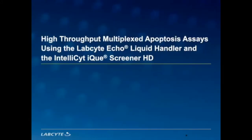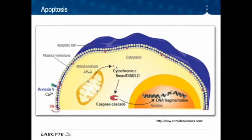As an example, I wanted to share some work using the LabSite Echo liquid handler and the IntelliSite IQ HD to run high-throughput, multiplexed apoptosis assays. Apoptosis is the best characterized type of programmed cell death. Because of its importance in development, homeostasis, and the pathogenesis of different diseases such as cancer, apoptosis has undergone extensive investigation. During apoptosis, several changes affecting the plasma membrane, mitochondria, cytoplasm, or nucleus can be measured. One of the earliest events is the translocation of phosphatidylserine from the inner to outer leaflet of the plasma membrane, detectable with annexin 5. Mitochondrial dysfunction also occurs, accompanied by decreased membrane potential and release of cytochrome C, leading to caspase activation and DNA fragmentation.